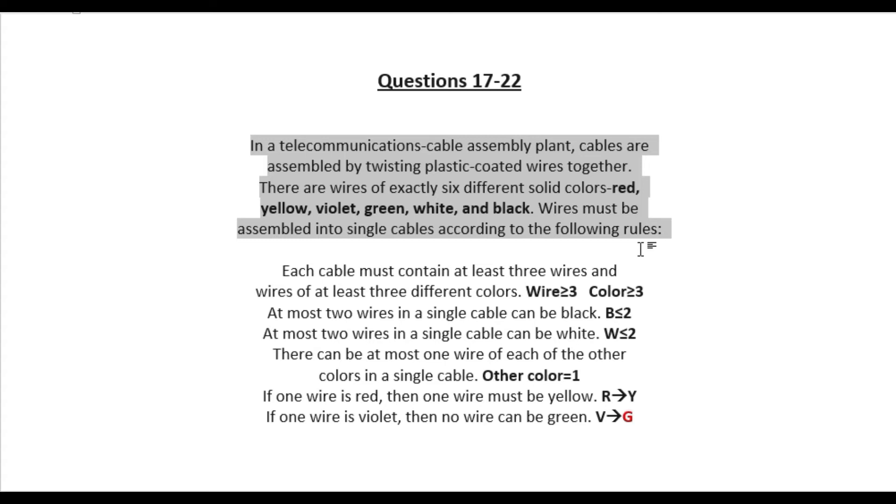In a telecommunication cable assembly plant, cables are assembled by twisting plastic coated wires together. There are wires of exactly six different solid colors. Wires must be assembled into single cables according to the following rules.